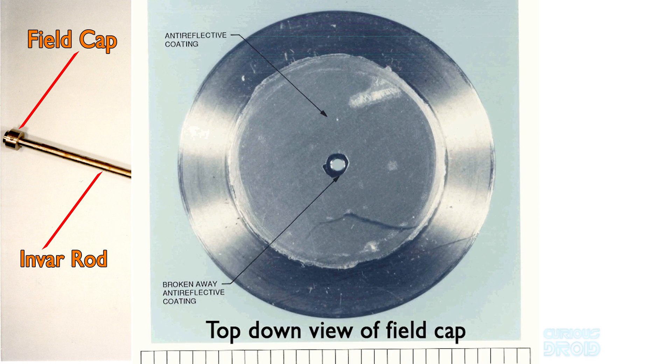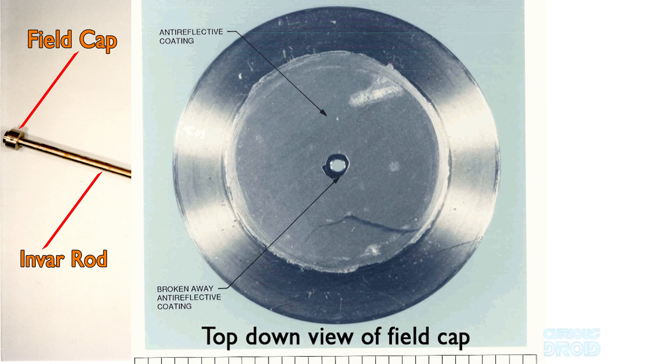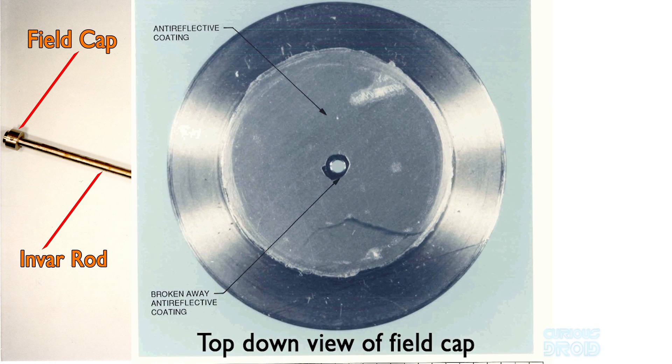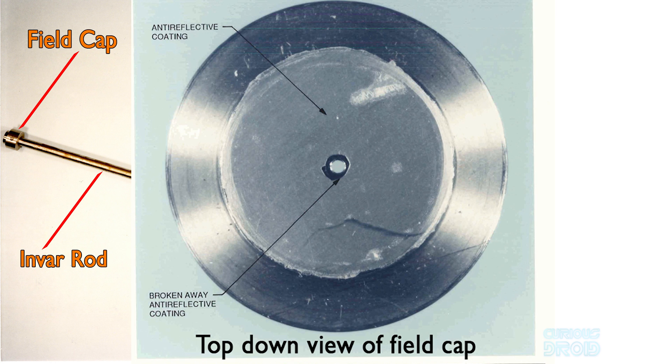At some point, a small section of this non-reflective coating on one of the field caps was chipped off around the center hole.